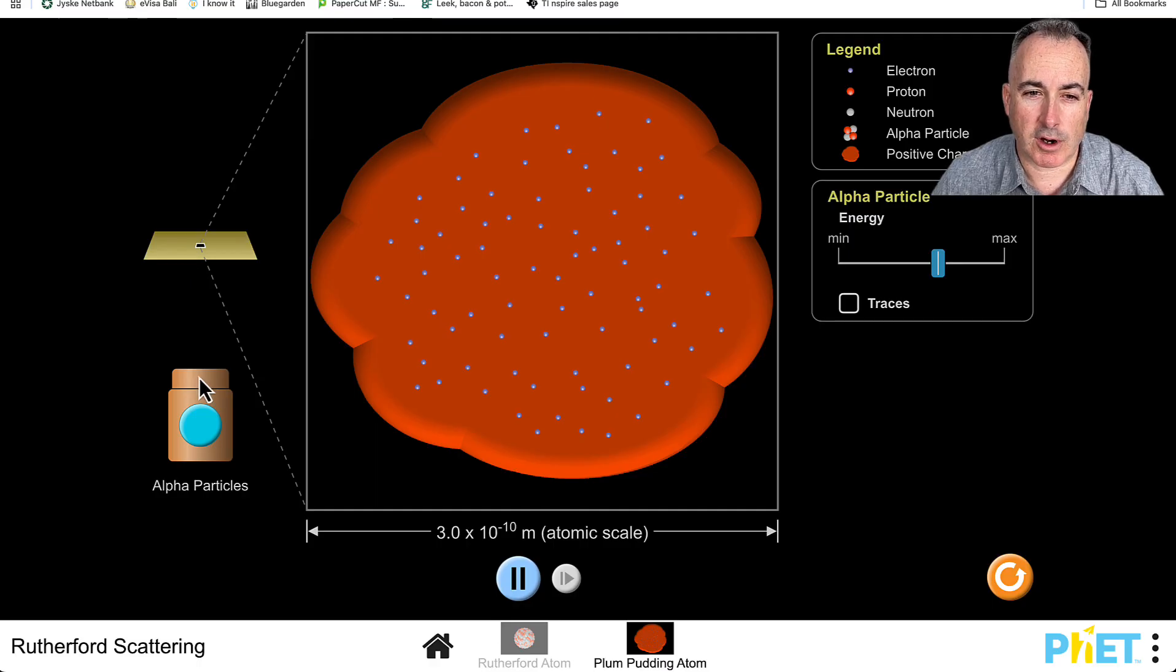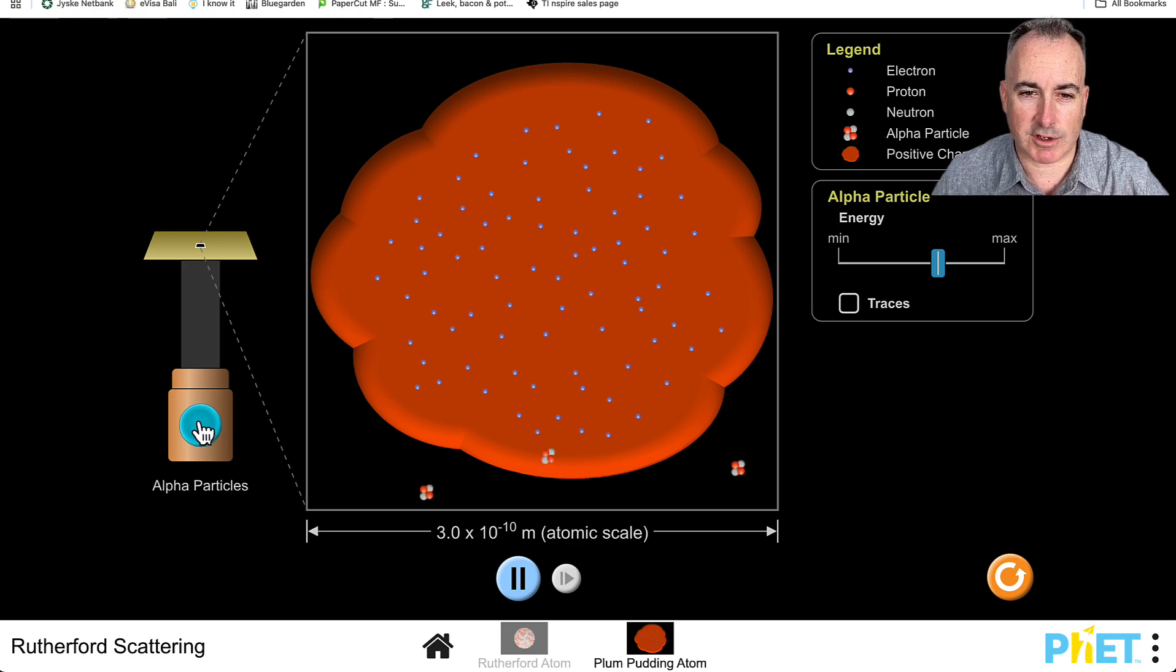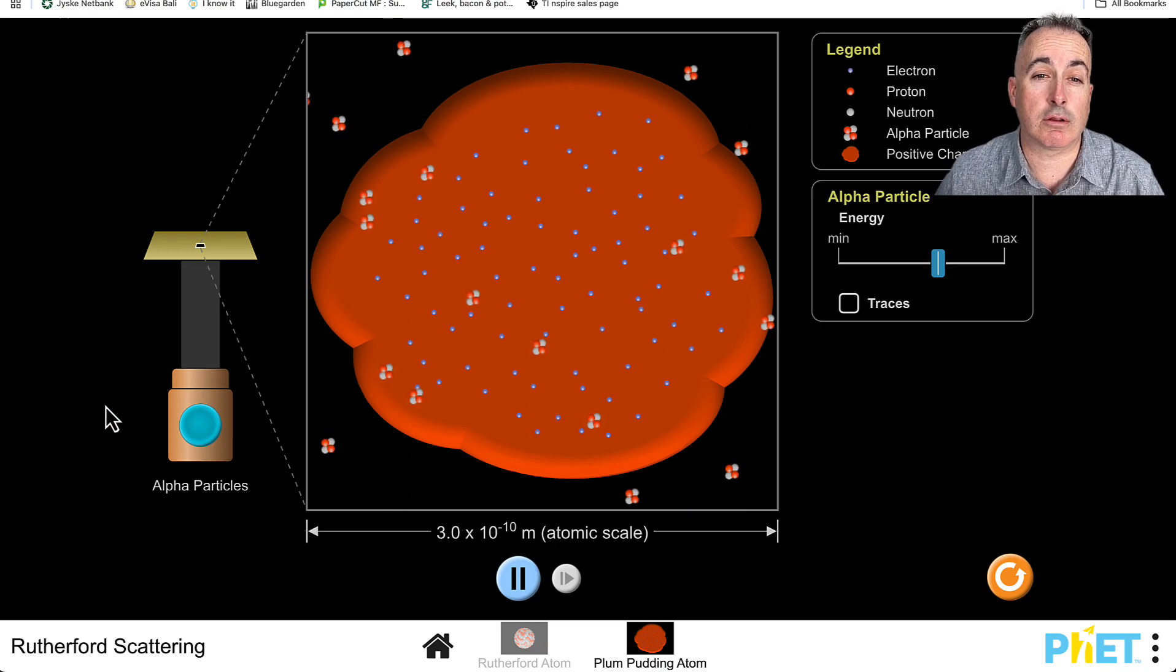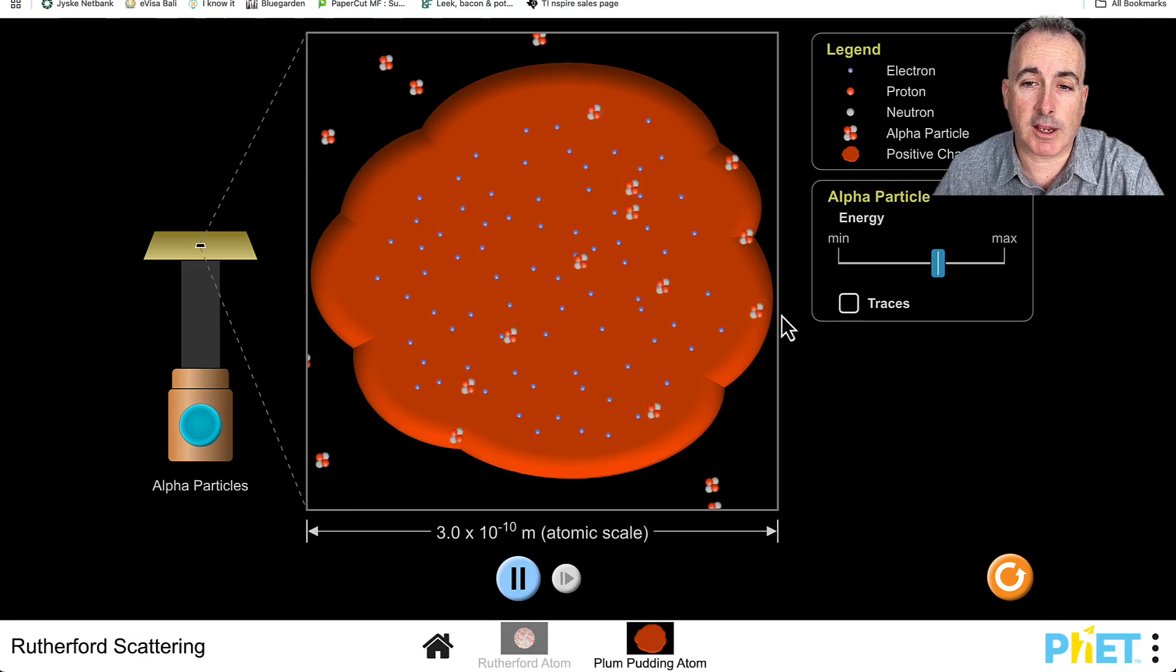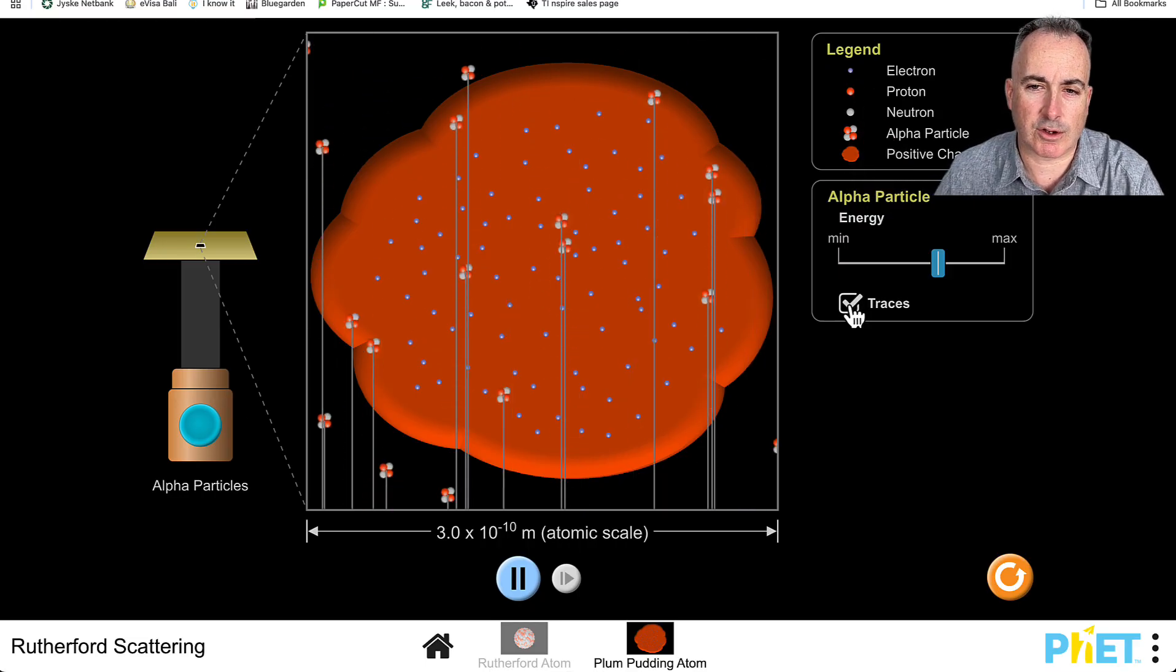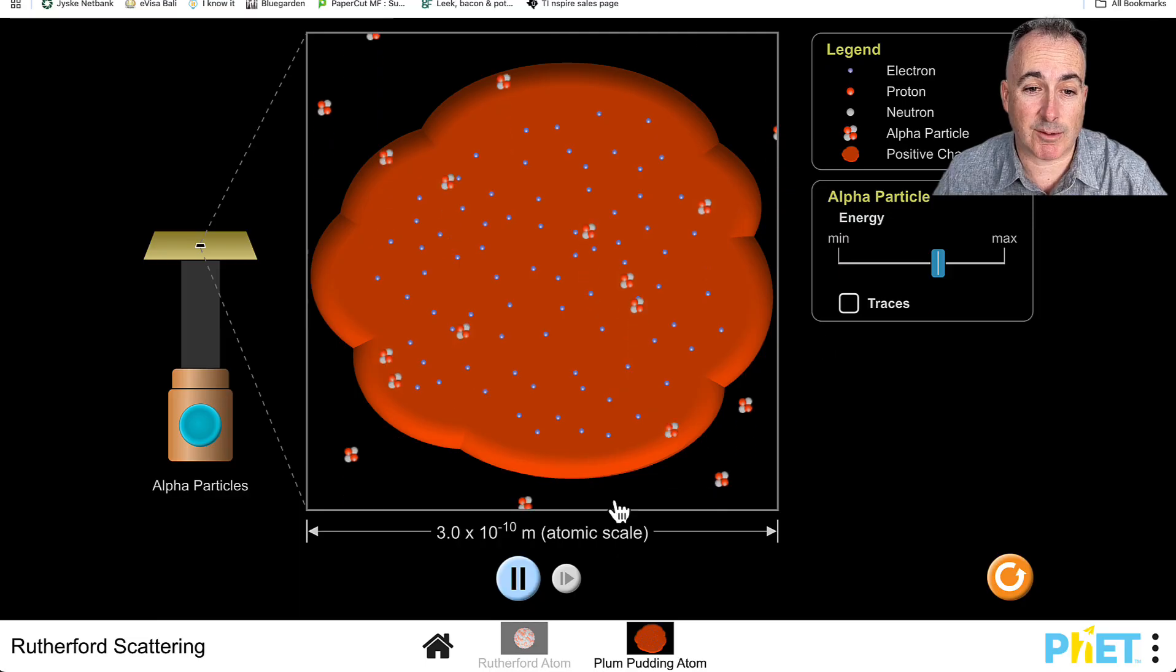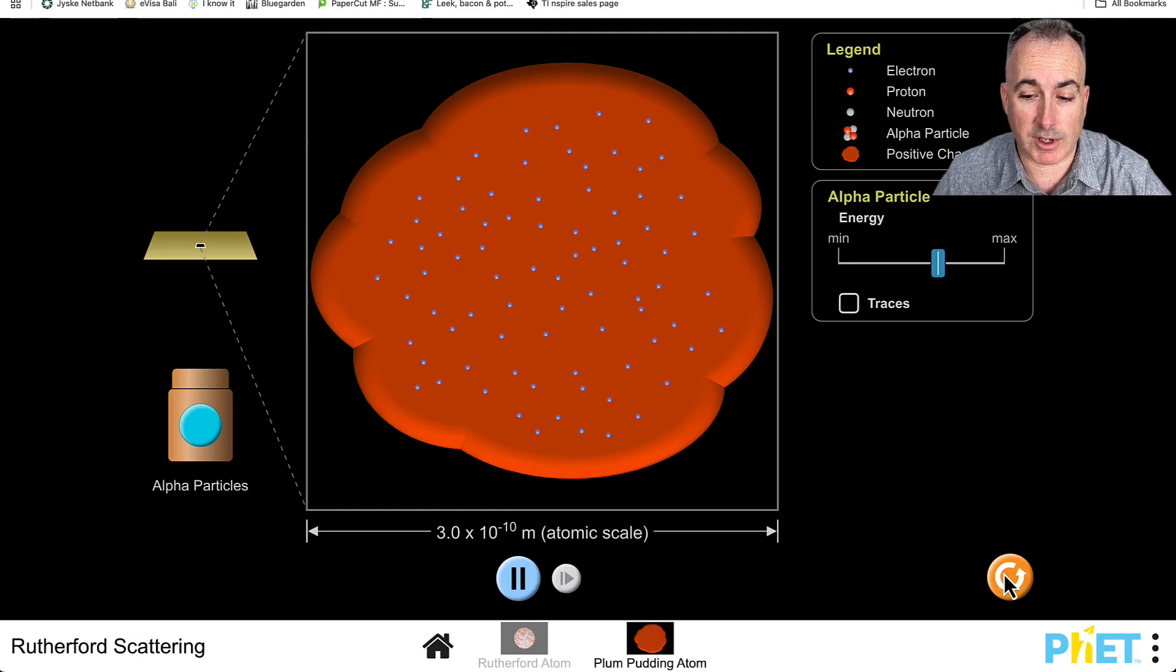Remember what an alpha particle is. If we're going to draw them—this red is a proton, this gray color is a neutron. How many nucleons does an alpha particle have? It should have two protons and two neutrons. Do you see why it's two and two? Let's see what happens. If we fire them off, they should just go straight, go through undeflected. I can put the traces to see which direction they're going, but nothing is very exciting. That's what we should get if we have a plum pudding model.